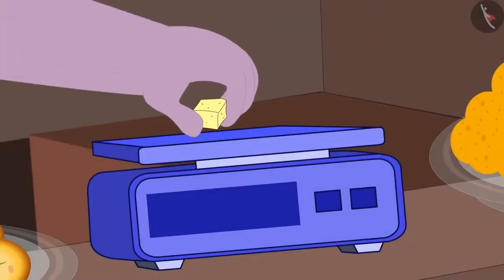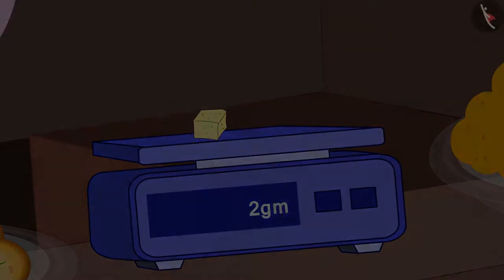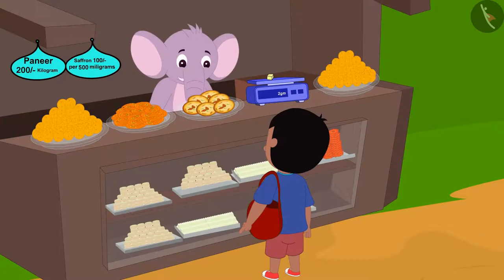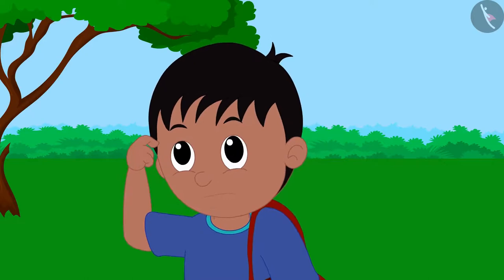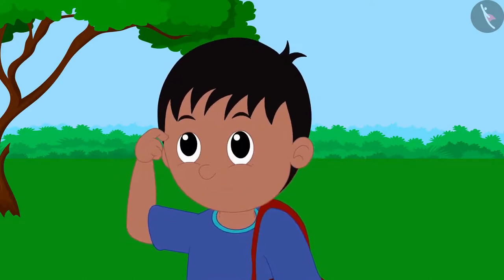Appu then placed 2 grams of paneer on a weighing scale and said to Raju, Look Raju, will your mother be able to make any dish using it? No, looks like I swapped the units of these 2 items.